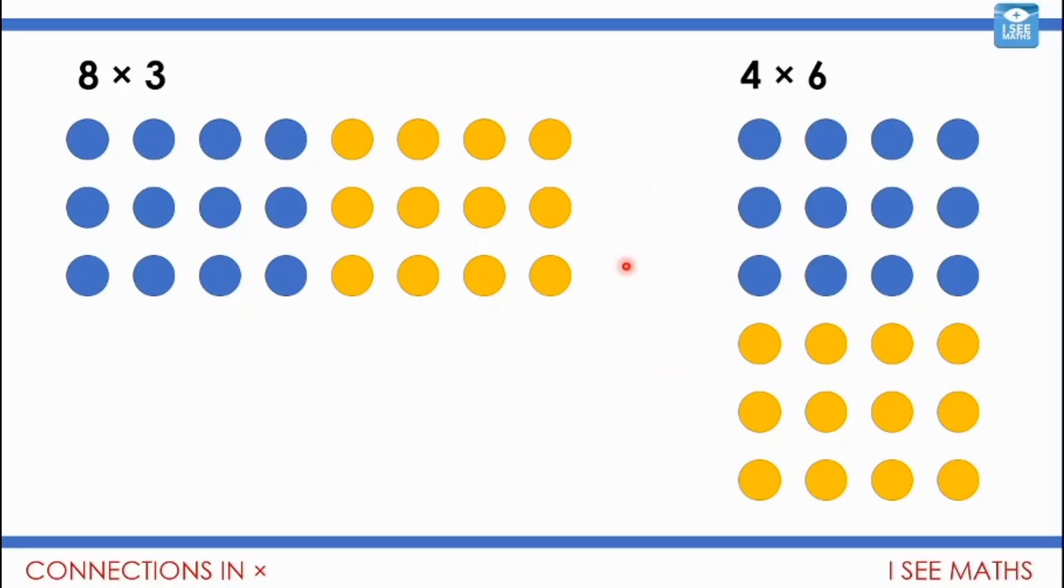And eight threes and four sixes are the same. So when you're multiplying, if you double one number, like the three has been doubled to make it six, and you halve the other one, so eight has been halved to make it four, in total we have the same amount, 24 dots on both pictures.